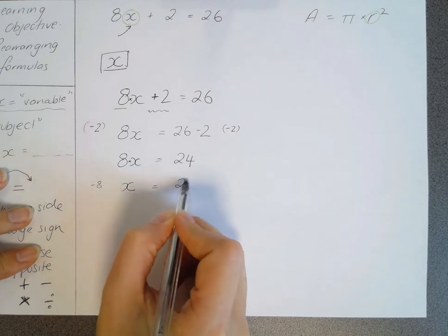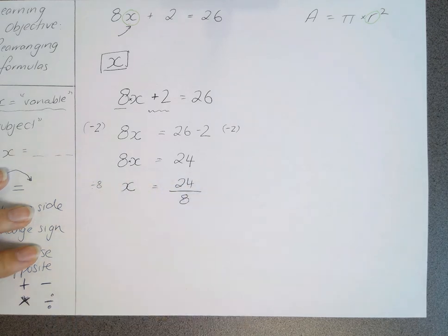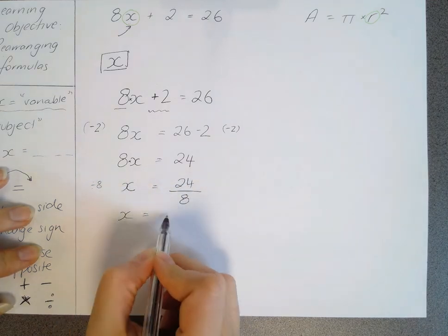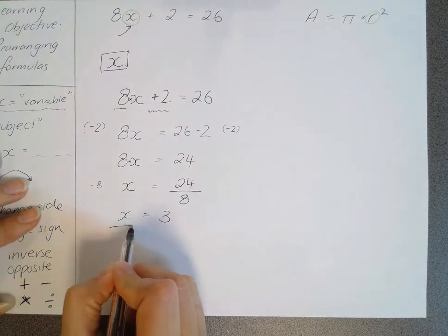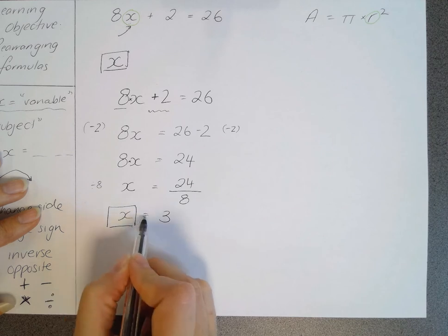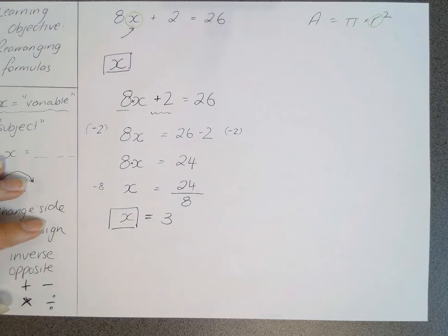And on this side, we would have 24 divided by 8. And if we get out a calculator, we can do that and find the answer is 3. 24 divided by 8 is 3. So that means we have made x the subject. It is on its own. The only thing appears on the other side of the equal sign.